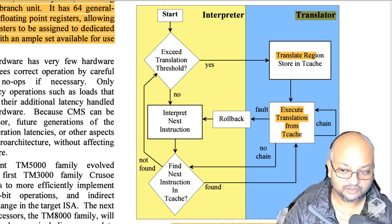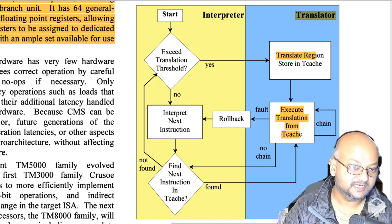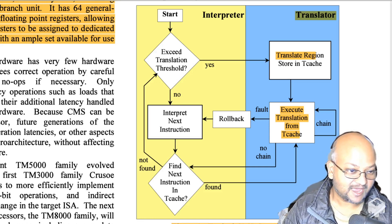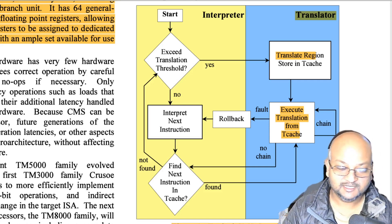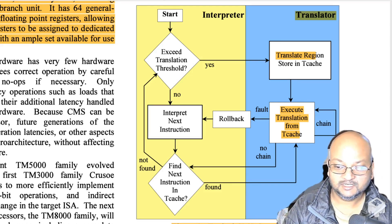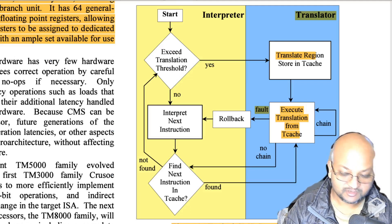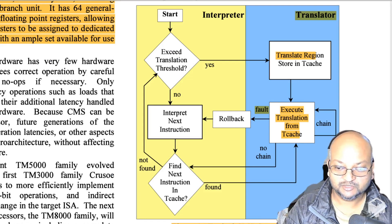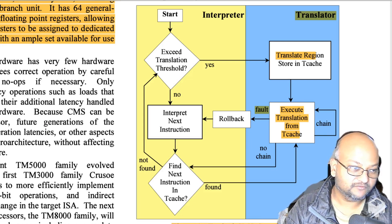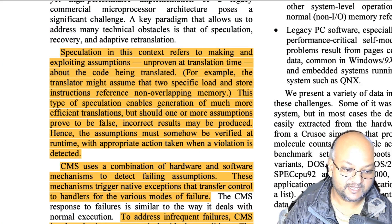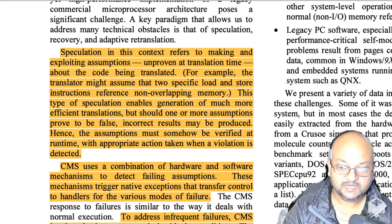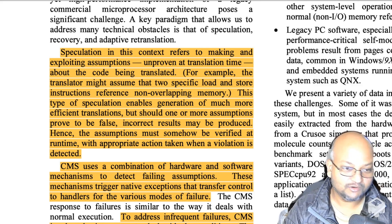The translator can perform a lot of optimizations on the code. The group of instructions it looks at is larger than a basic block, so it can include loops and branches, which means it can apply all the standard data flow optimizations — constant folding, loop unrolling, constant propagation, and so on — just as a regular compiler would. If an exceptional circumstance or fault is encountered, execution can be rolled back and fall back to interpretation. To get good performance, it is important for this translator to perform speculative execution — making and exploiting assumptions at translation time that may not be guaranteed to hold, in order to generate more efficient code.